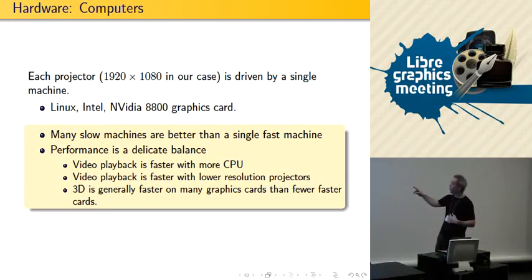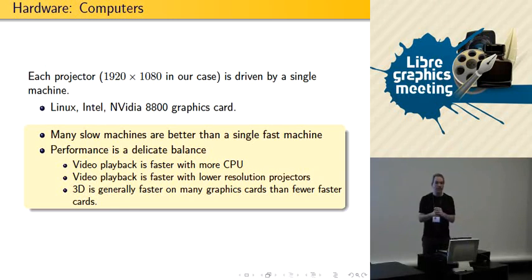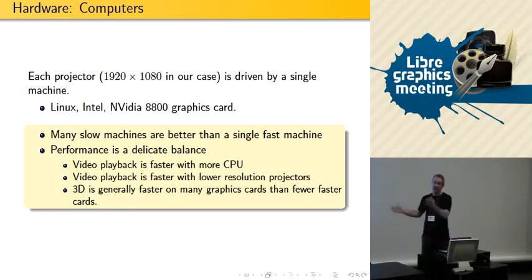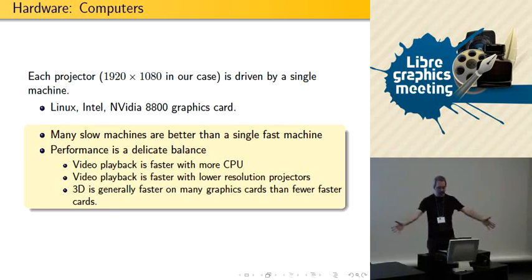The point here is that many slow machines are much better than one big fast one — and less expensive. Also, it breaks less: if you have one server and it breaks, that's it. If you have one machine die among many, you can just replace that one. So this is the concept of divide the work, and we tend to use one machine per projector.